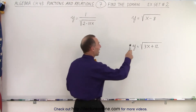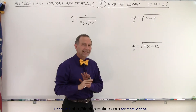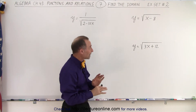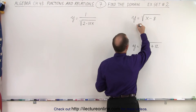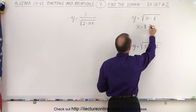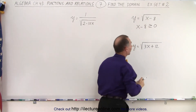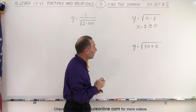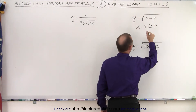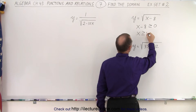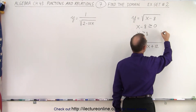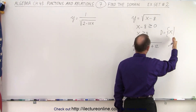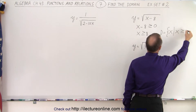For the first two examples, there's no denominator, so we don't have to worry about it being equal to zero. But we do have to worry about what's inside the radical — it cannot be less than zero. So x minus 8 must be greater than or equal to zero. Otherwise, you have something that's not defined; you cannot have the square root of a negative number. Moving the 8 across, x must be greater than or equal to 8. That's our restriction: the domain is the set of all x's such that x is greater than or equal to 8.